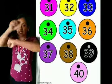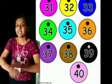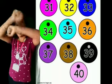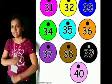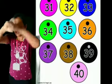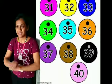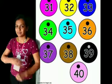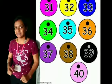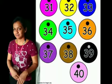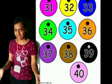Thirty-one, thirty-one, thirty-two, thirty-two, thirty-three, thirty-three, thirty-four, thirty-four, thirty-five, thirty-five, thirty-six, thirty-six, thirty-seven, thirty-seven, thirty-eight, thirty-eight, thirty-nine, thirty-nine, forty, forty.